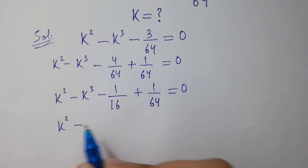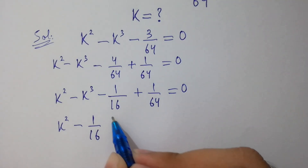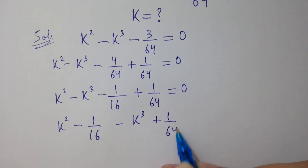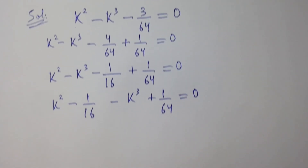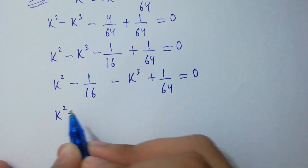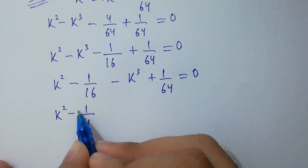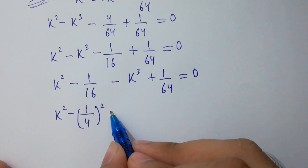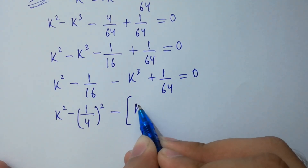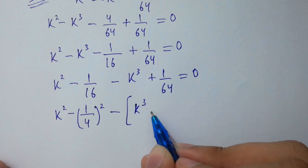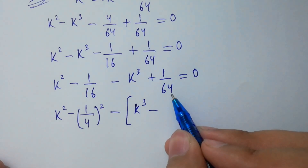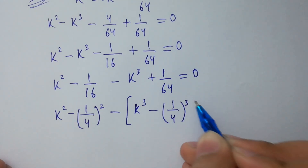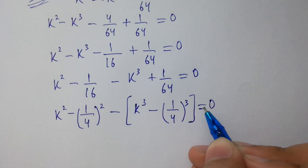This gives k squared minus 1 over 16, minus k cubed plus 1 over 64, equal to 0. Here, 1 over 16 can be written as 1 over 4 squared, because 4 squared equals 16. And 1 over 64 can be written as 1 over 4 cubed, because 4 cubed equals 64. Equal to 0.